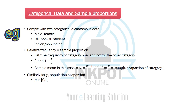We have seen how to plot categorical data using a discrete histogram. The mean of categorical data has a special interpretation. If a sample has 2 categories — also known as dichotomous data, meaning two categories, such as male/female, DU/non-DU student, or Indian/non-Indian — the relative frequency or sample proportion of each category is obtained by dividing the frequency of that category by the sample size.